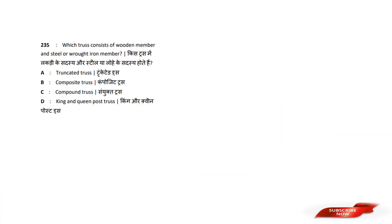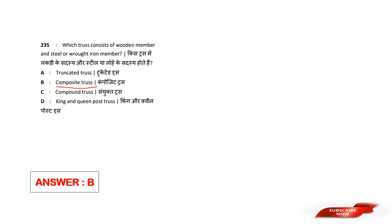Which truss consists of wooden members and steel or iron members combined? Options are: A) Truncated Truss, B) Composite Truss, C) Compound Truss, D) King and Queen Post Truss. Answer option B — Composite Truss. Two materials are used in one truss, so that is a Composite Truss.